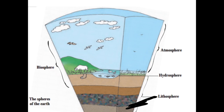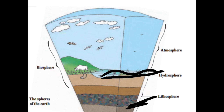Where land is present, there is also presence of stone. So this part of the land is known as the lithosphere. Then the part of the water — the various types of water bodies present on the Earth are known as the hydrosphere. It means the part of the water is known as the hydrosphere.